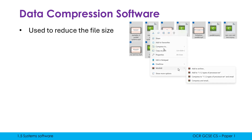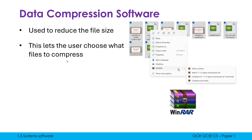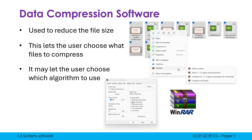An operating system typically has built-in compression tools. Here I'm highlighting some files in Windows, right-clicking, and you can see there's a 'compress to' option that lets me create a zip file, which is a type of lossless compression. That's built into the OS, but I've also downloaded a separate utility called WinRAR, which provides additional tools. It lets me choose which algorithm to use and offers a few more tweaks and options compared to what Windows provides on its own.